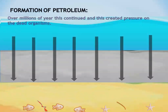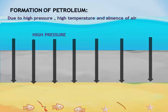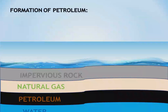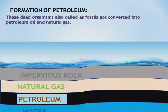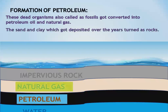Over millions of years this continued, creating pressure on the dead organisms. Due to high pressure, high temperature, and absence of air, these dead organisms — also called fossils — got converted into petroleum oil and natural gas. The sand and clay deposited over the years turned into rocks.